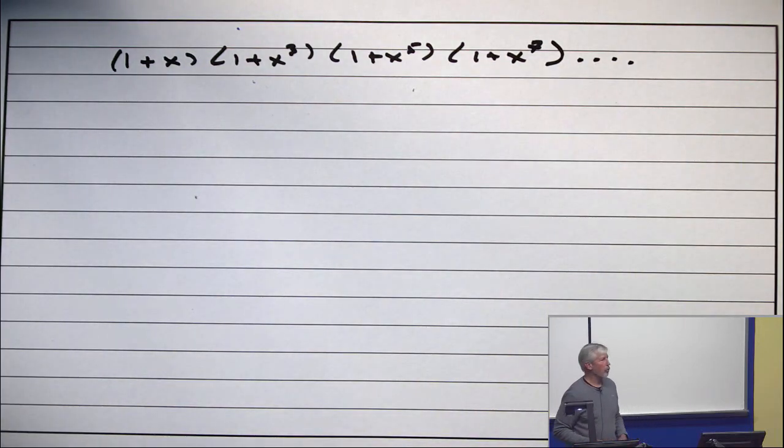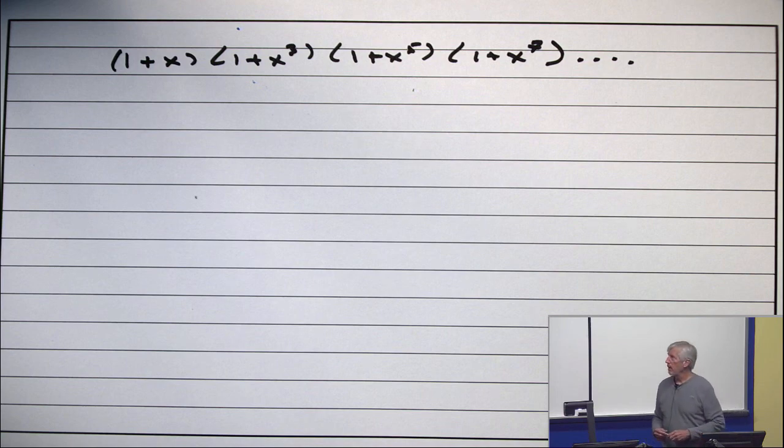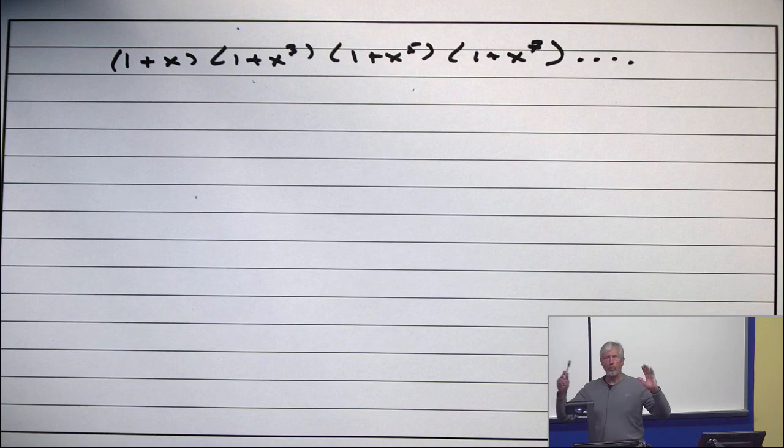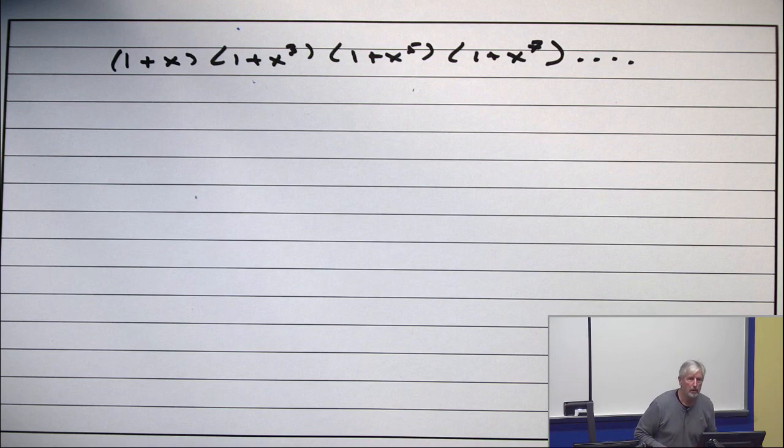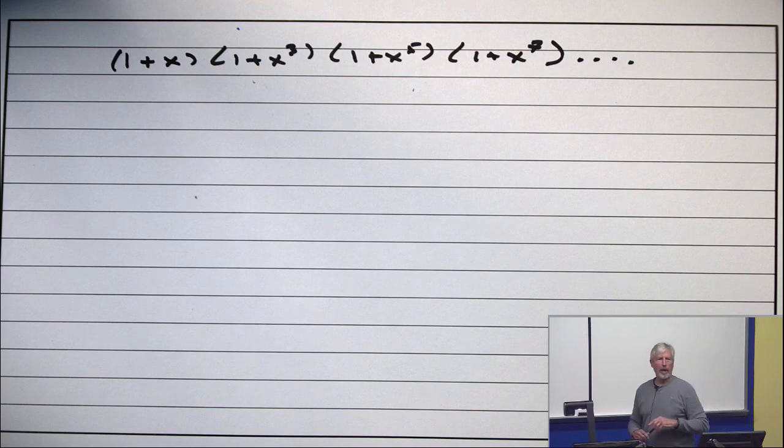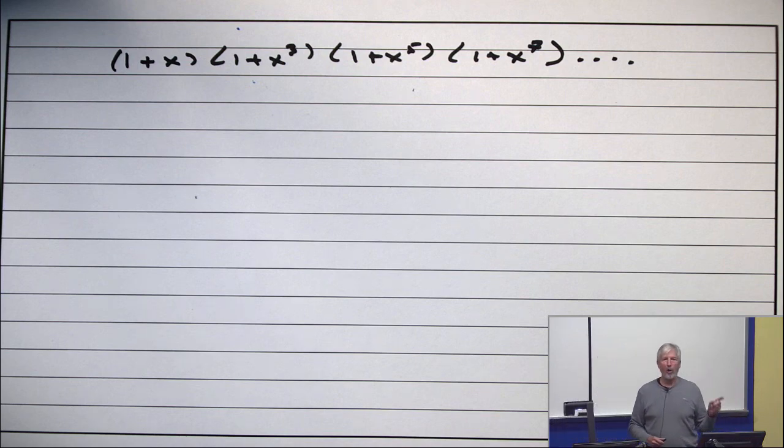This is the generating function for what? 1 plus x times 1 plus x cubed times 1 plus x to the fifth plus 1 plus x to the seventh plus etc. What is that in words? What's the nth coefficient? Distinct odd parts. Exactly. Let me repeat it a little louder, what you said. He said it's distinct odd parts. It's the number of partitions of the integer n into parts, all of which are distinct and all of which are odd.